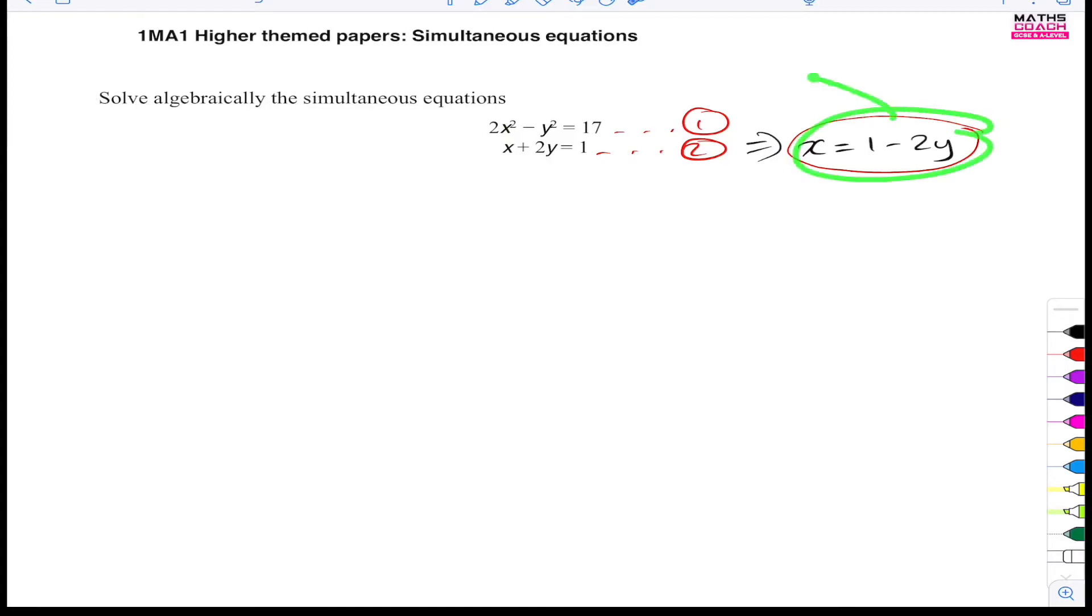And this is what you're going to substitute for x in equation number one. So let's go ahead and do that. So we have 2 bracket 1 minus 2y squared. So all I've done here is I put x in right there because x is equal to 1 minus 2y. And the rest of it, I just add along. So minus y squared is equal to 17.